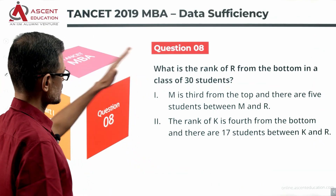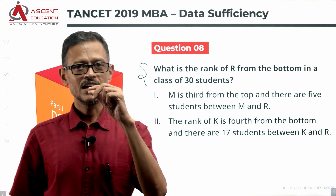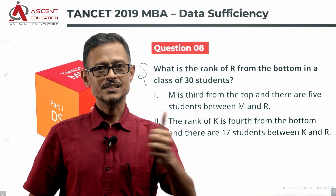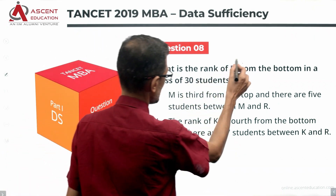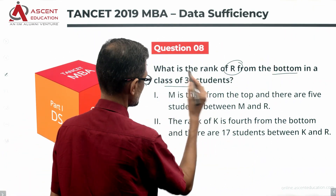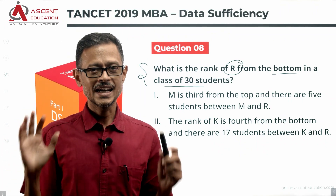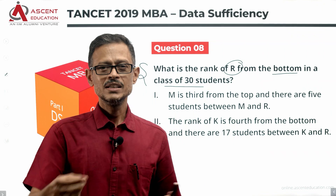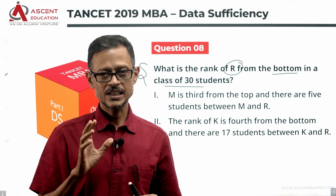As always, let's read the question first. The question is: what is the rank of R from the bottom in a class of 30 students? The rank of R from the bottom is what we need to find out.